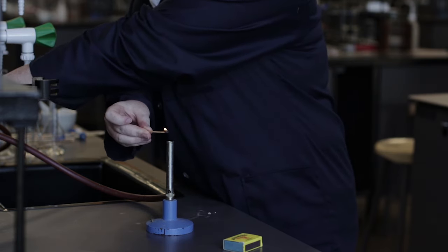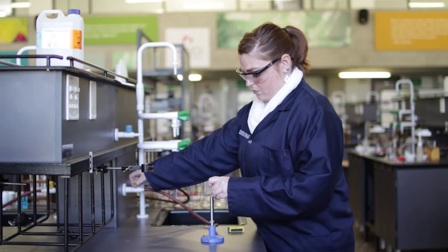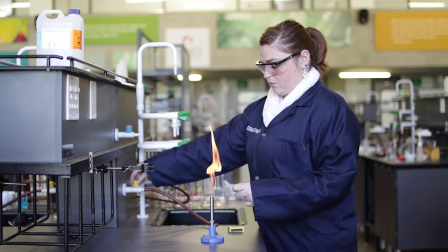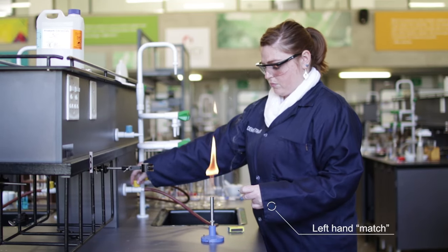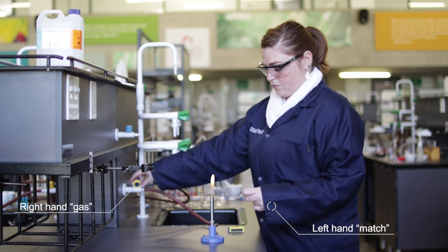A rule of thumb is, if the Bunsen burner is on your left hand side and the gas tap is on your right hand side, the lit match will be in your left hand and your right hand will open the gas tap.